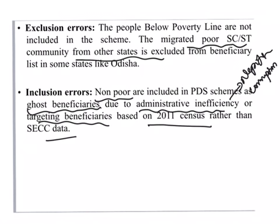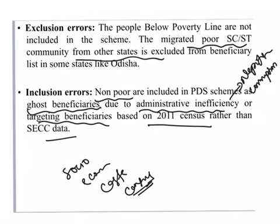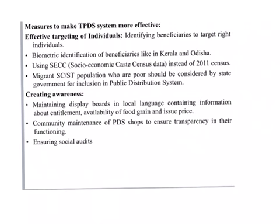SECC data is Socio-Economic Caste Census. The government has not used SECC data to target beneficiaries but has instead used the 2011 census. Coming to the last key term — measures — the question asks about measures to suggest for making TPDS more effective.